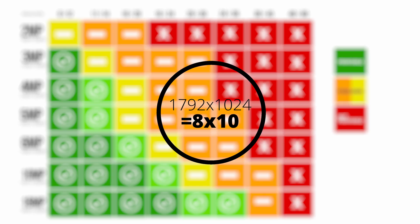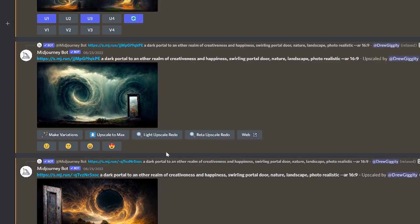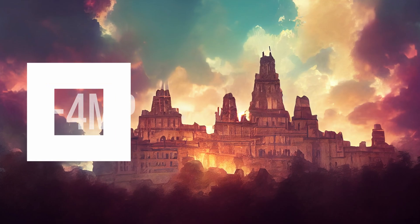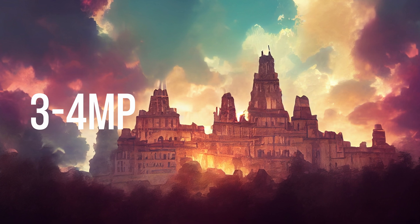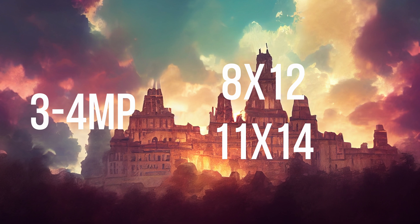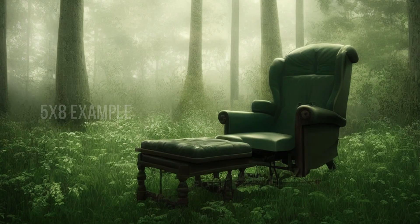Since Midjourney in its current state has a maximum resolution of 1792x1024, you'll see at best that you can really only make a simple 8x10 print, which is definitely a bummer. If you use the beta upscaling though, you can achieve a larger resolution of 2688x1536, which puts the image in the range of a 3-4 megapixel image — perfectly acceptable to allow you to print an 8x12 or even an 11x14 without seeing too much pixelation. This is important because if you print something that has too low of a resolution at a higher print size, you'll notice a huge loss in detail and massive pixelation, which looks like this.